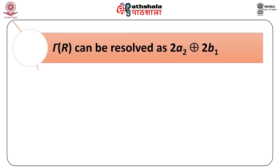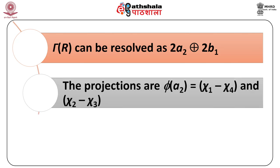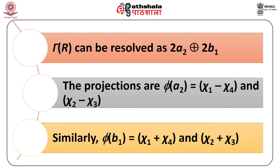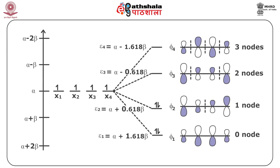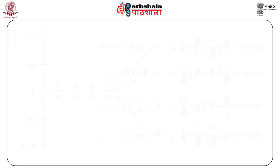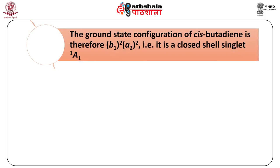Applying the projection operators: the a2 combinations are χ1−χ4 and χ2−χ3, and the b1 combinations are χ1+χ4 and χ2+χ3. From the figure, χ1 and χ3 transform as b1 and χ2 and χ4 as a2. The ground state configuration of cis-butadiene is therefore (b1)²(a2)², and it is a closed-shell singlet ¹A1.